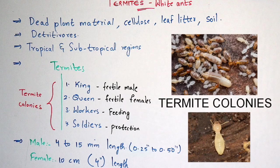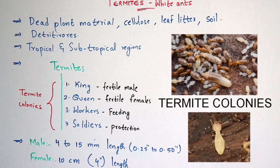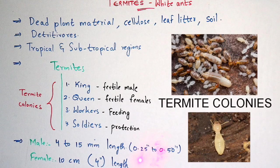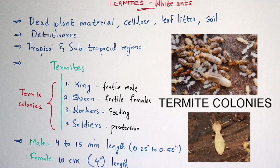The king and queen help in ruling the termite colony. Just as humans live in homes, termites live in termite colonies. The male termite is 4 to 15 millimeters in length, that is 0.25 to 0.50 inches. The female is 10 centimeters in length, that is 4 inches. By this you can see that the size of the male is smaller than the female — female is larger in size and the male is smaller.